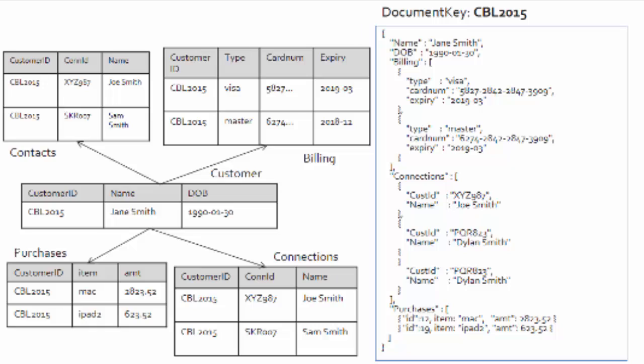Finally, let's bring it all together by adding purchases — another field with an array of JSON objects for the Mac and the iPad this customer purchased. We've combined five-plus tables into one JSON document. Any questions on that before we move on?